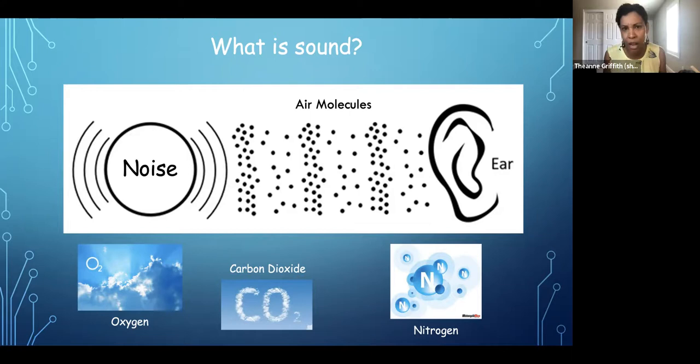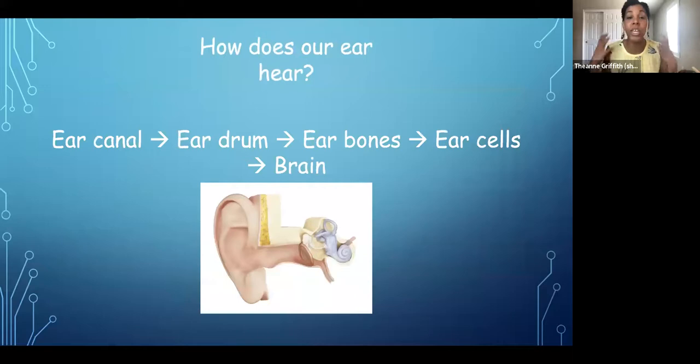Now, you might be wondering, what are air molecules? Well, our air also isn't invisible. It's made up of small little things like the oxygen we breathe in and then the carbon dioxide we breathe out. And it's also filled with a lot of nitrogen. So again, when I clap my hands, I send those oxygen and carbon dioxide and nitrogen molecules just bouncing all over the place, sending sound waves to my ears that my ears then detect and say, Theanne clapped her hands.